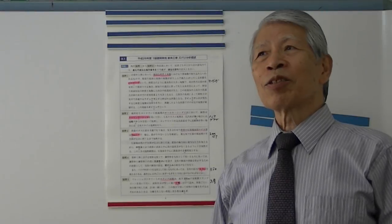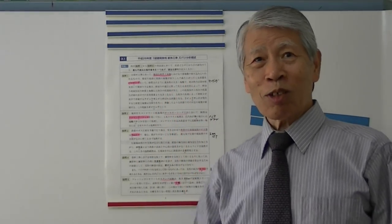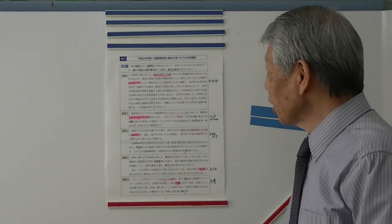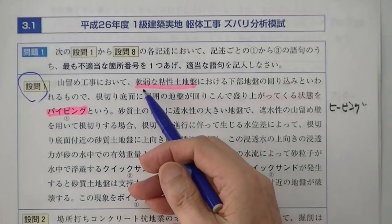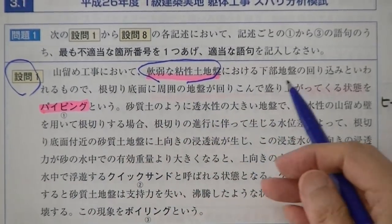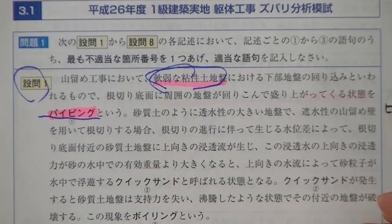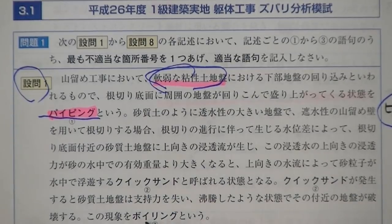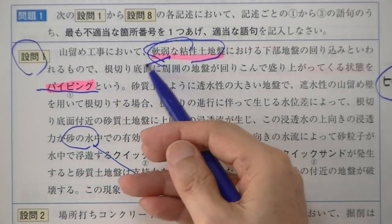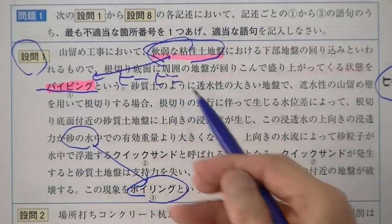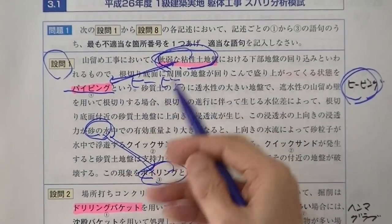いよいよ今年出る問題をズバリ説明しましょう。1番目は山止め工事です。軟弱な粘土地盤における土の回り込みはヒービングといいます。砂のような地盤のものはボイリングといいます。この区別をしっかりつけてください。